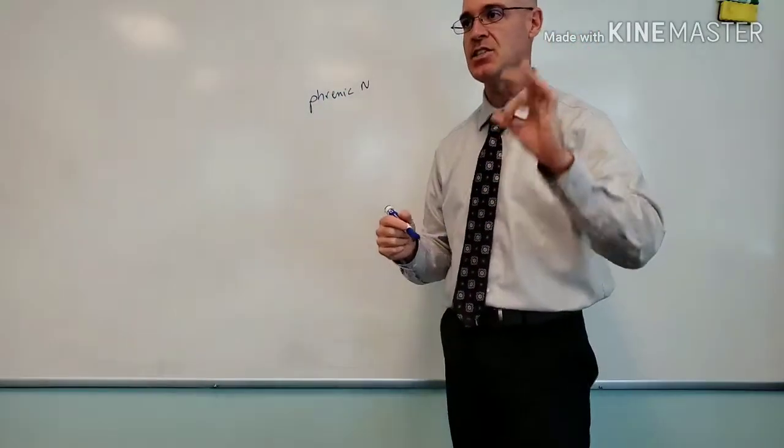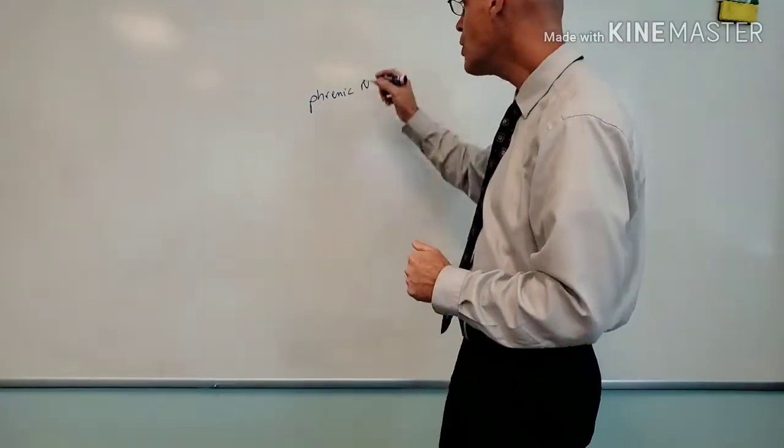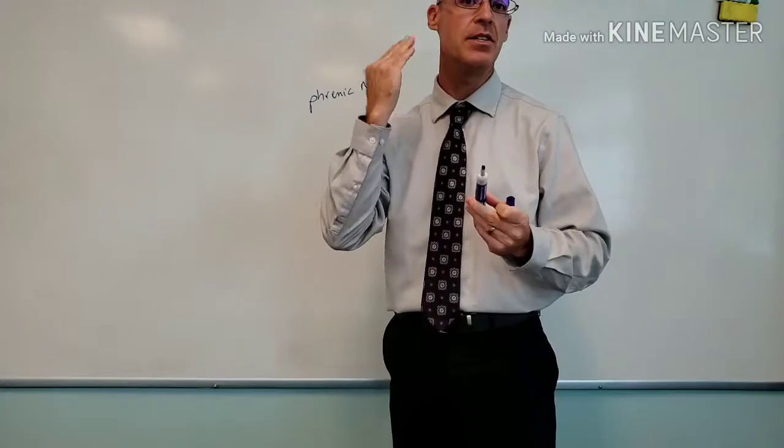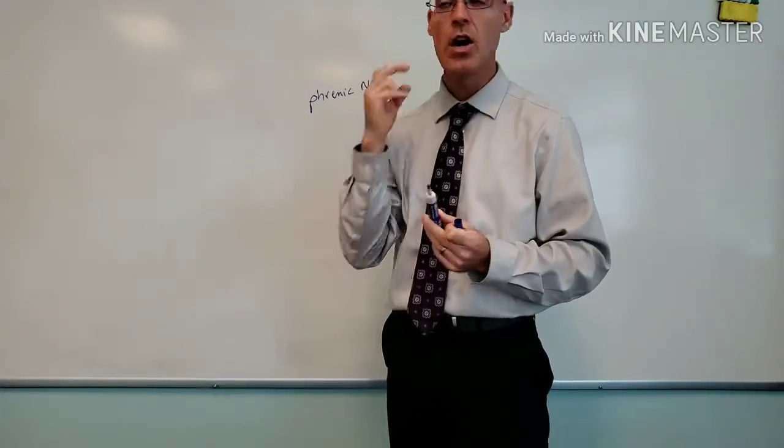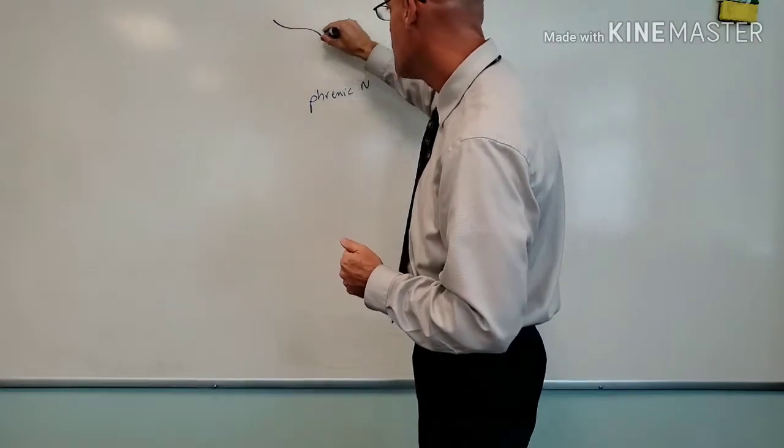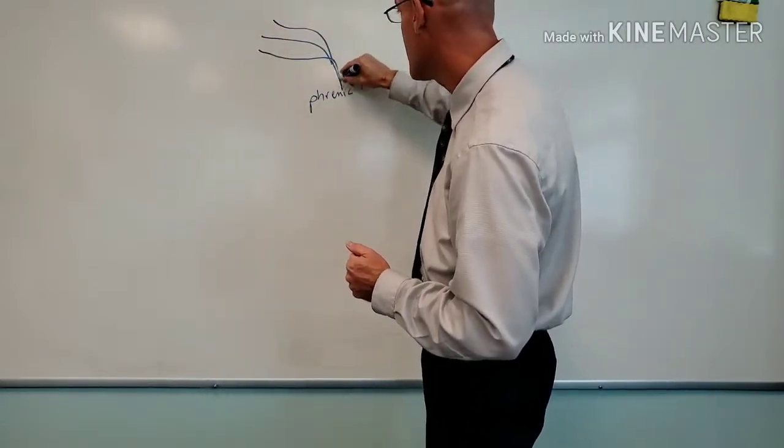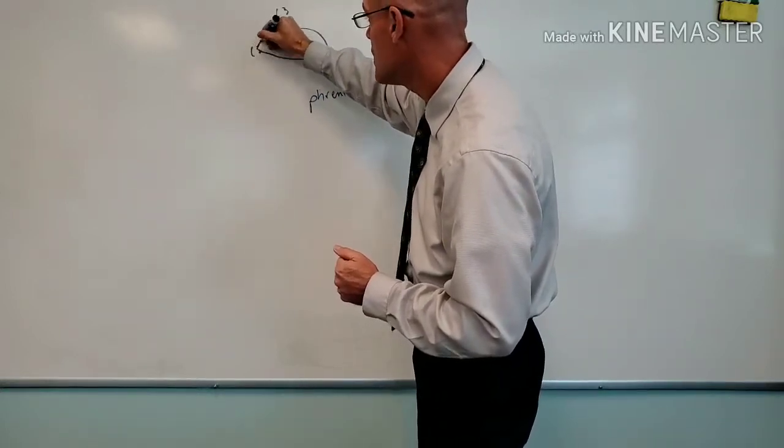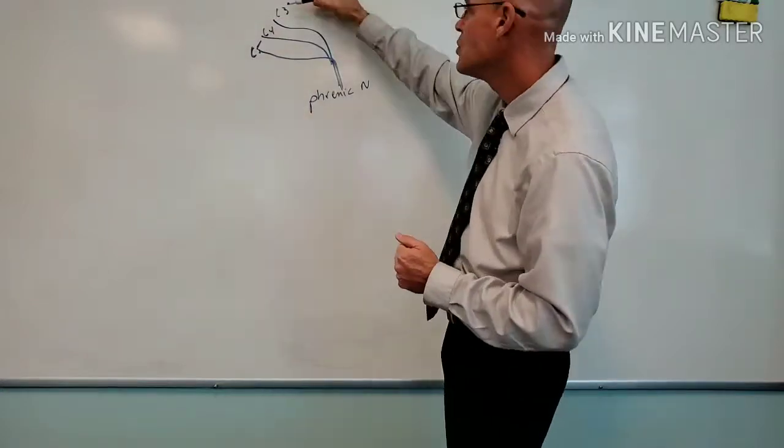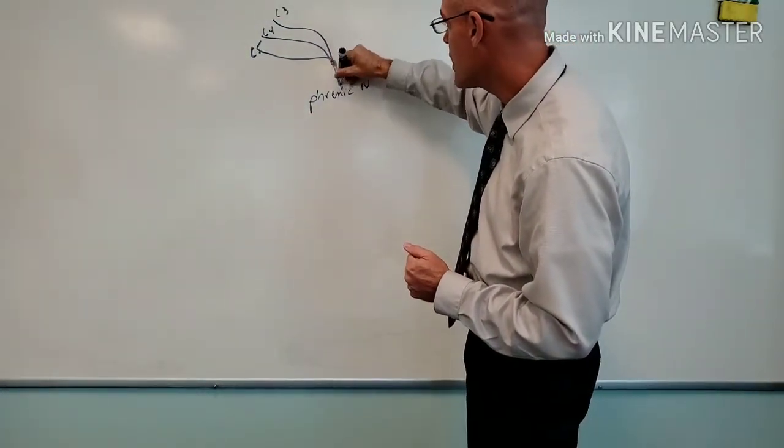Let me say a little bit more about the phrenic nerve. There's a saying in anatomy that says C3, C4, C5 keeps the diaphragm alive. So C3, C4, C5 cervical spinal nerves are going to supply the nerves that form the phrenic nerve.